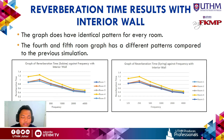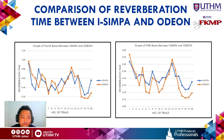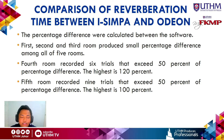Finally, this is the comparison of reverberation time between i-Simpa and Odian. Rooms four and five do not show a best fit between the two software graphs. The percentage difference was calculated: rooms one, two, and three produced small percentage differences. However, room four recorded six out of 20 trials exceeding 50% difference — with a highest of 120% — and room five recorded nine out of 20 trials exceeding 50%, with a highest of 100%.